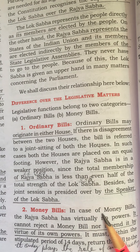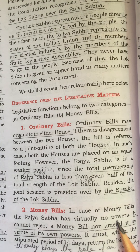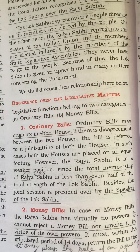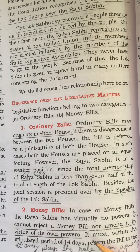In case of money bills, Rajya Sabha has virtually no powers at all. It cannot reject a money bill, nor can it amend or make any changes by virtue of its powers. Rajya Sabha only plays the role of an advisory body — it can only give certain recommendations. It must, within the stipulated period of 14 days, return the bill to the Lok Sabha.